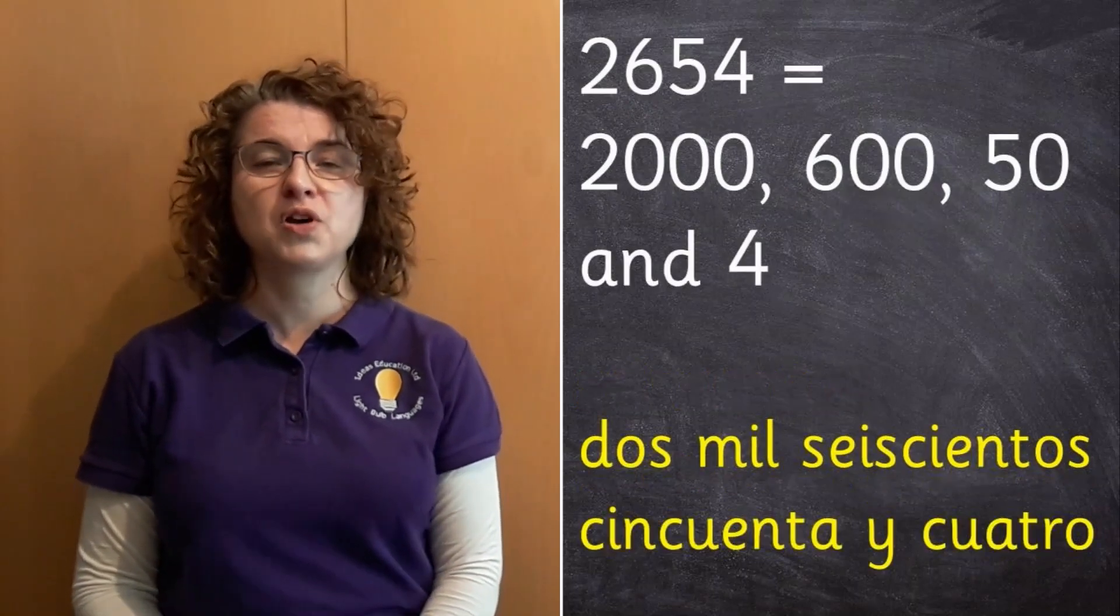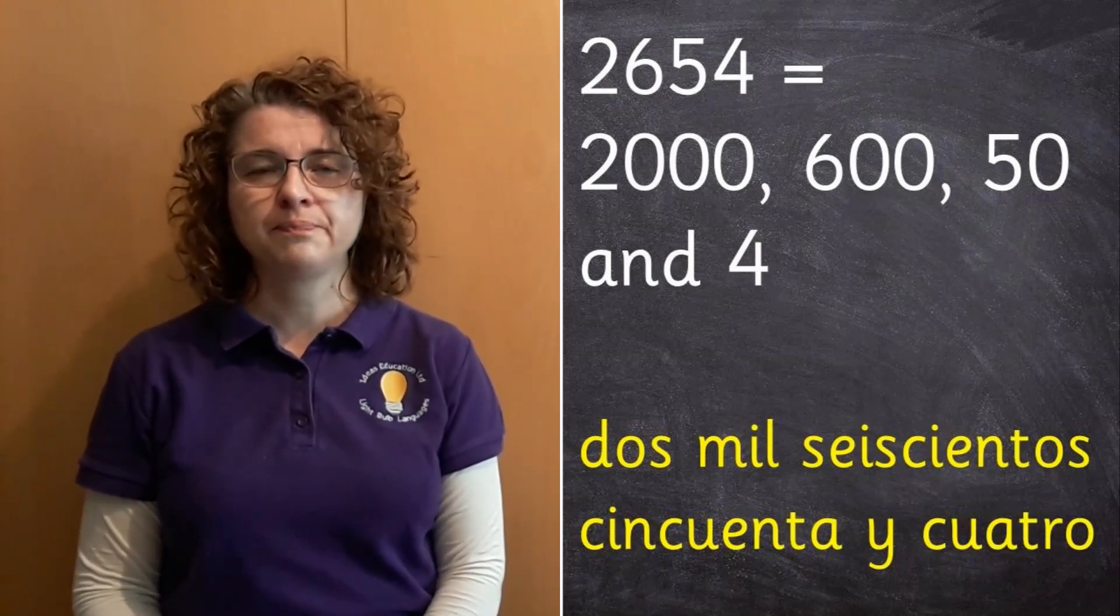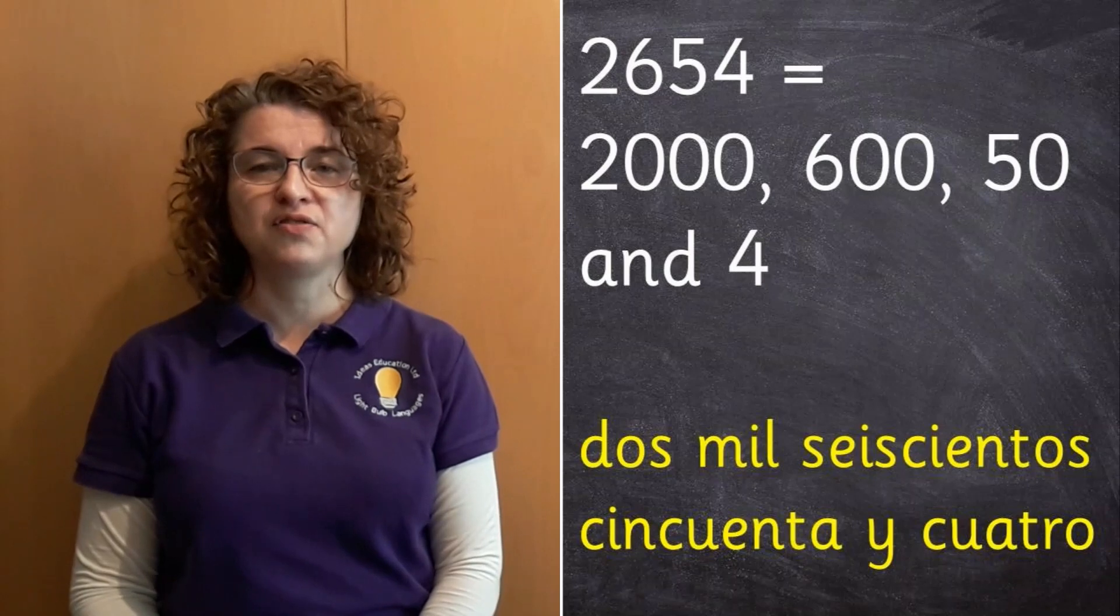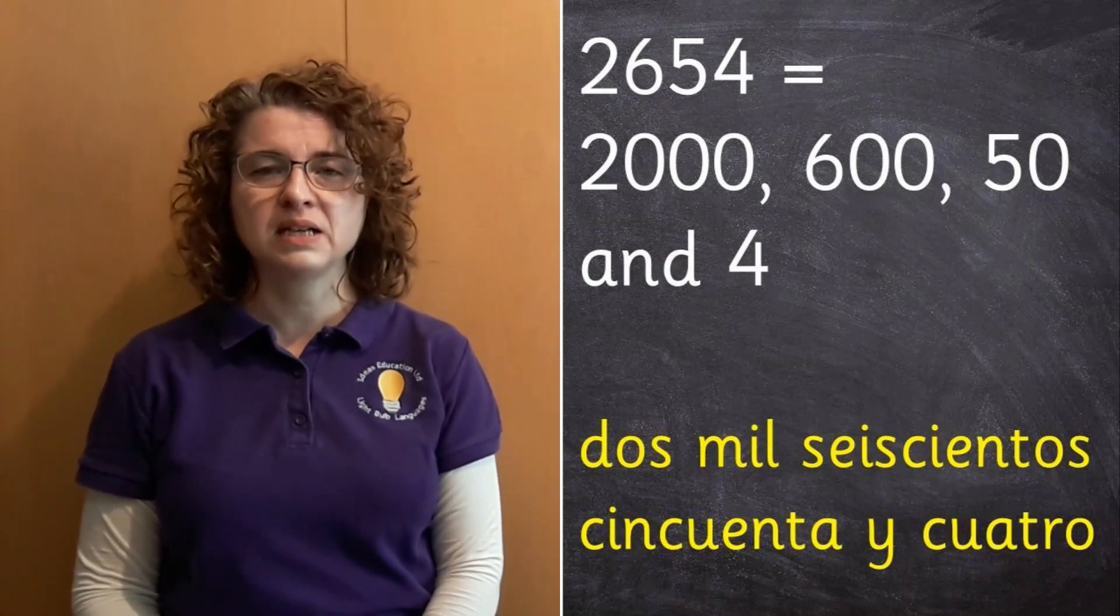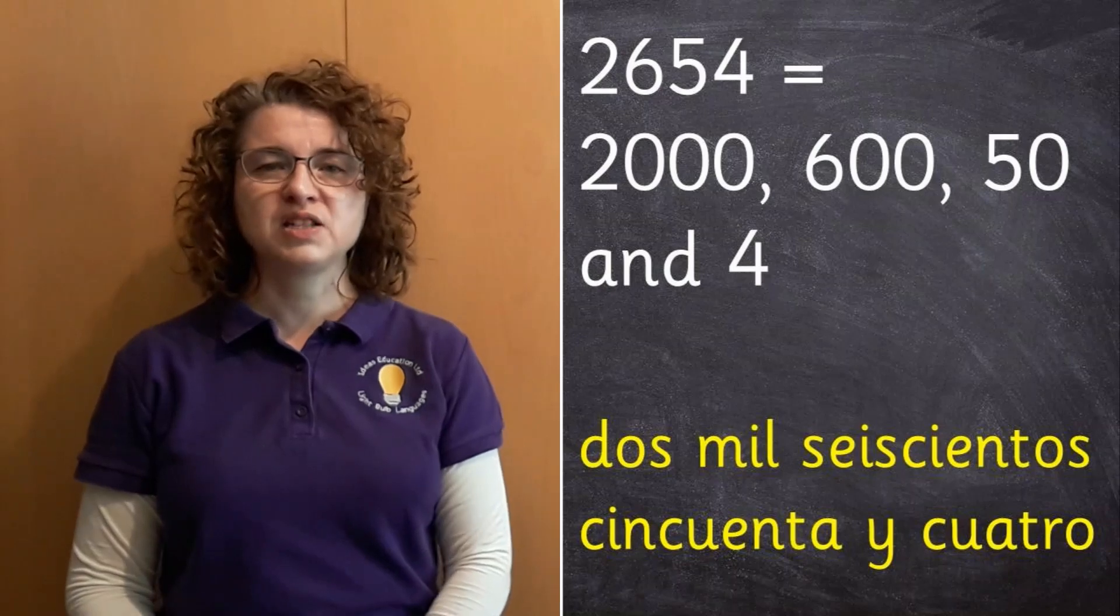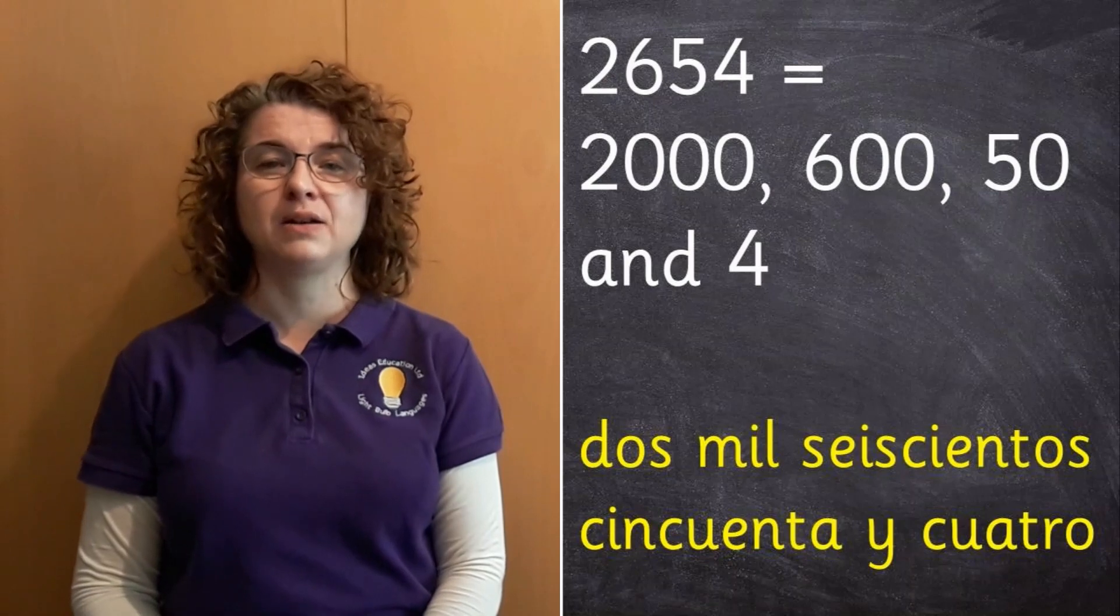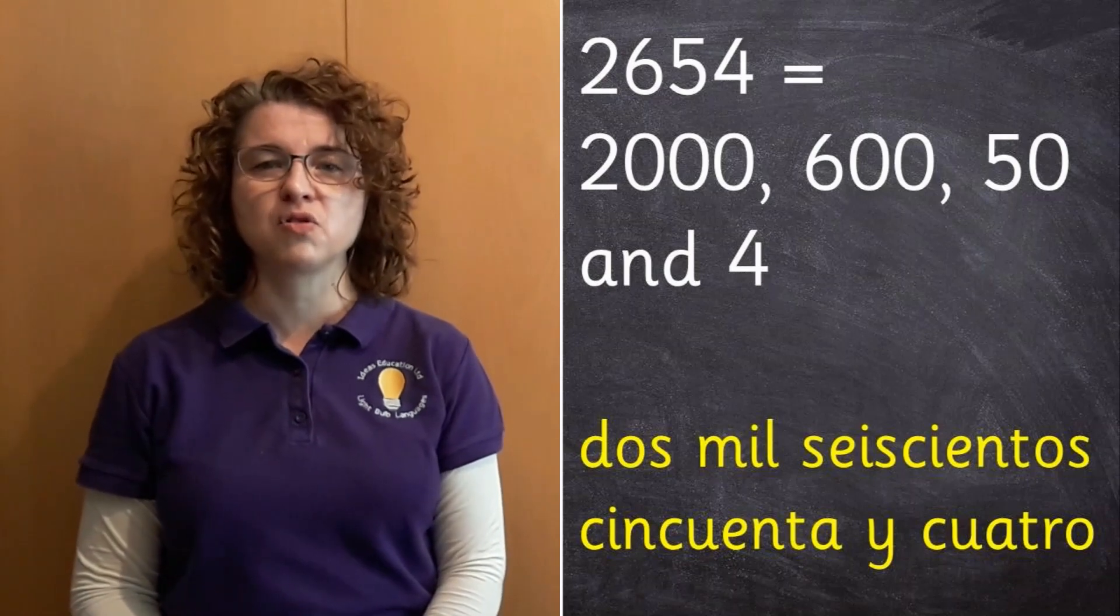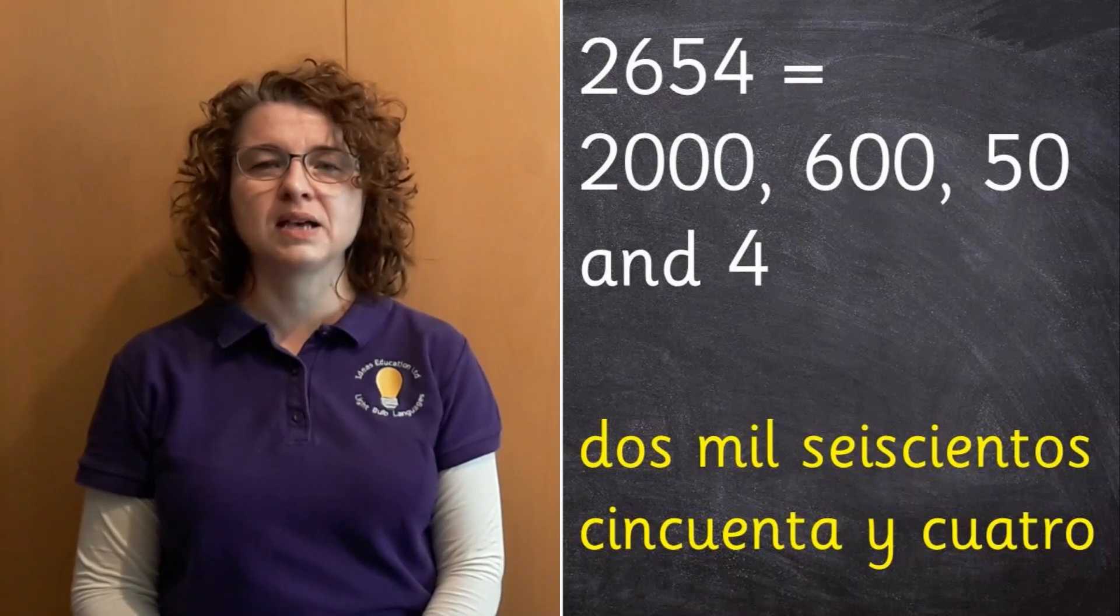Now we could use our word for thousand and make some much bigger numbers. So for example, if we wanted to say two thousand, six hundred and fifty-four, we would say dos mil seiscientos cincuenta y cuatro. It's very easy with the thousands. All you need to do is to put the number before the word mil. You don't have to make it plural or anything like that. So two thousand, six hundred and fifty-four is dos mil seiscientos cincuenta y cuatro.